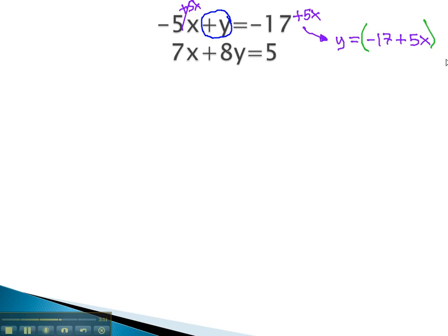If y is equal to this expression, it must also be equal to that expression in the other equation. And this is where we make our substitution. 7x plus 8y. Our y is negative 17 plus 5x, equals 5.